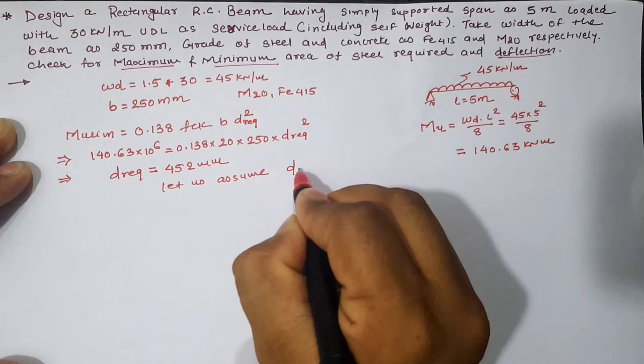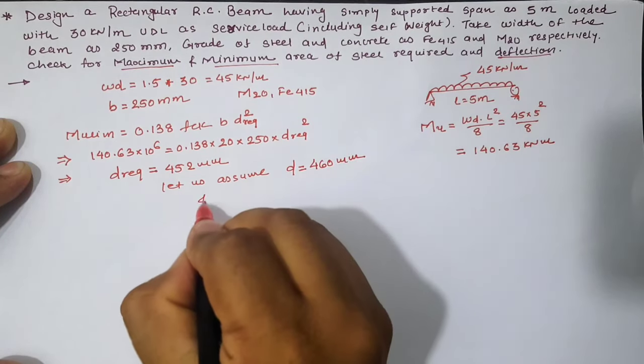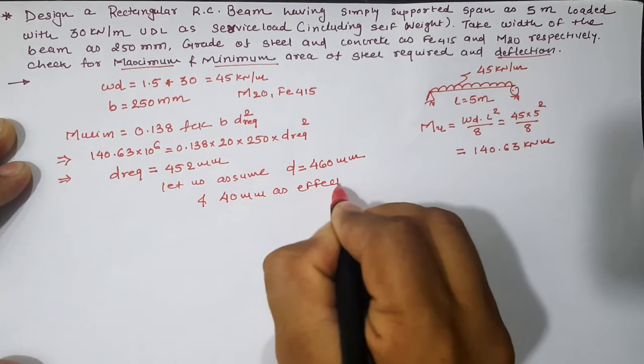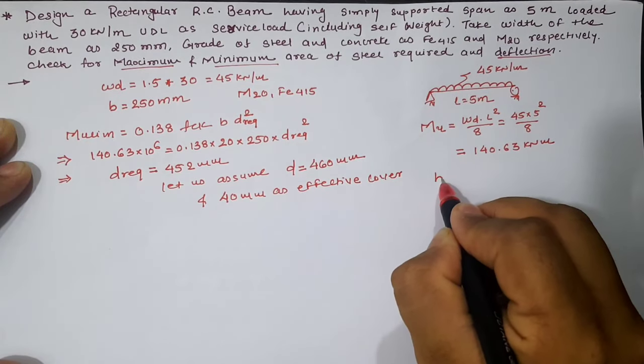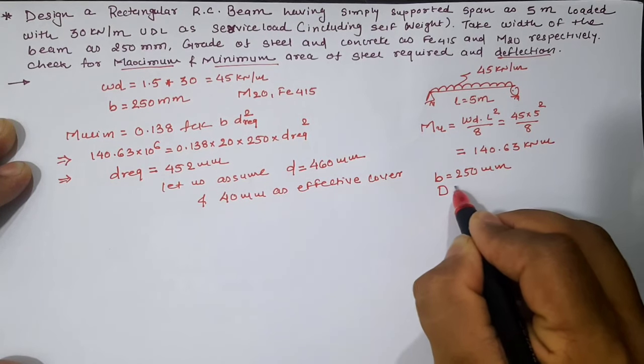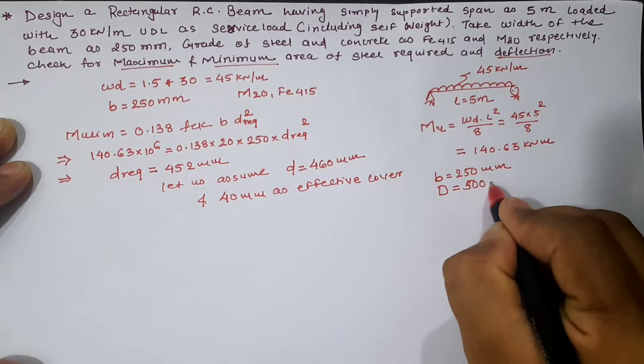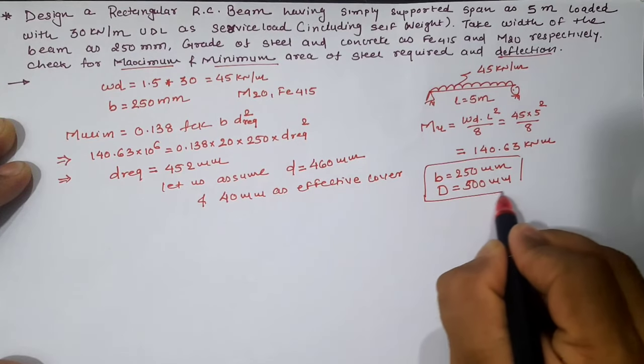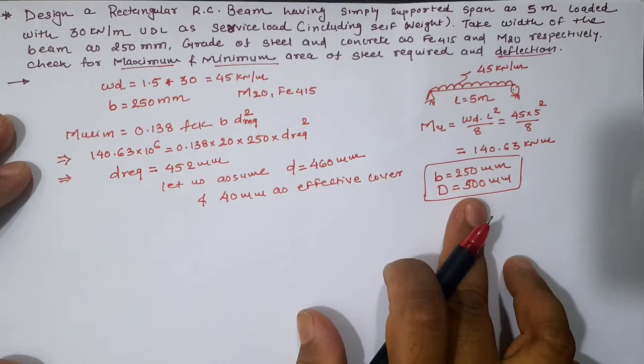Let us assume small d equals 460 mm and 40 mm as effective cover, so that our width of the beam is 250 mm and overall depth is d plus effective cover, which is 500 mm.